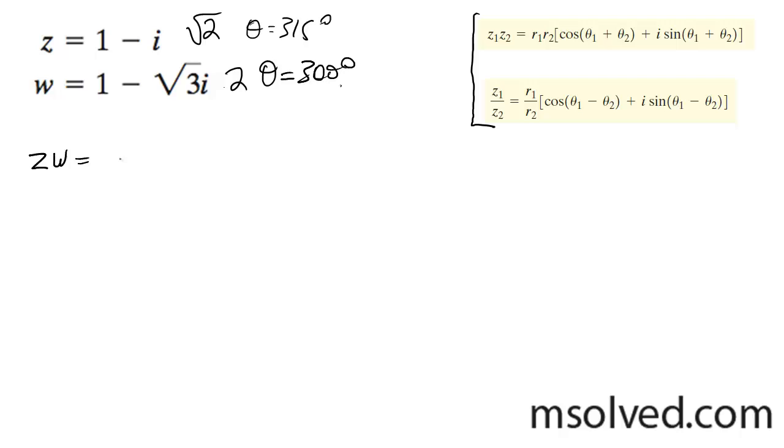z times w is going to be 2 times root 2, and then the cosine of 315 plus 300 degrees, plus i sine of 315 plus 300, which gives us 2 root 2.